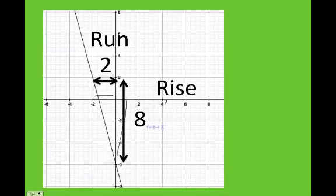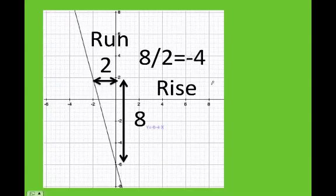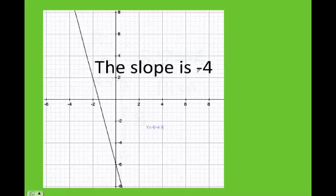Rise over run is 8 divided by 2, which equals 4. Then you need to ask yourself: is my slope positive or negative? Remember, upstairs is here and downstairs is here. As you can see, she's going downstairs, therefore my slope has to be negative. My slope by the rise over run method is negative 4.